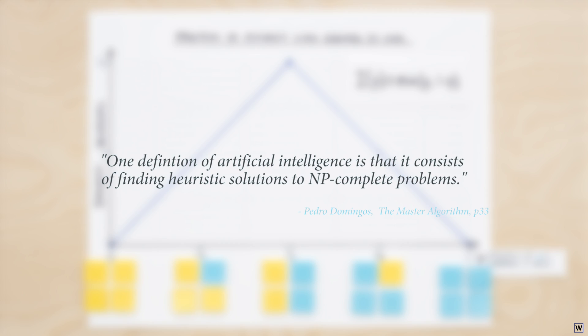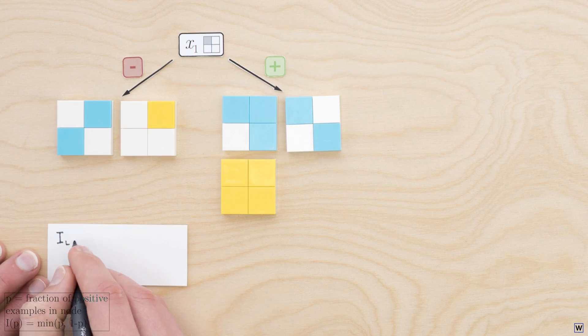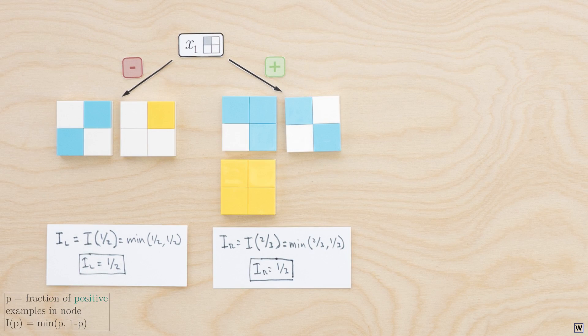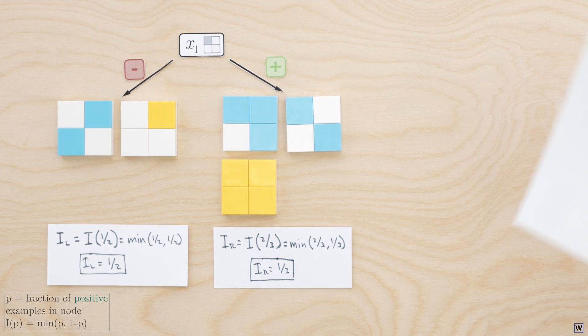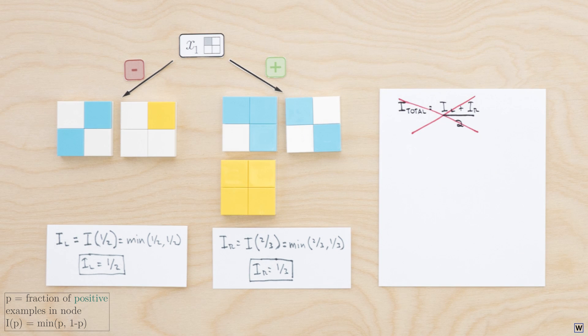Let's go ahead and compute the impurities for each of our two nodes across our splits. Since each split results in two impurity numbers, one for each node, we need some way of putting these numbers together into a single metric. We could simply take the average, but since one node could have more examples than the other, this could throw our metric out of balance. So it's probably a better idea to take a weighted average, where the weights correspond to the fraction of all examples that end up in each node.